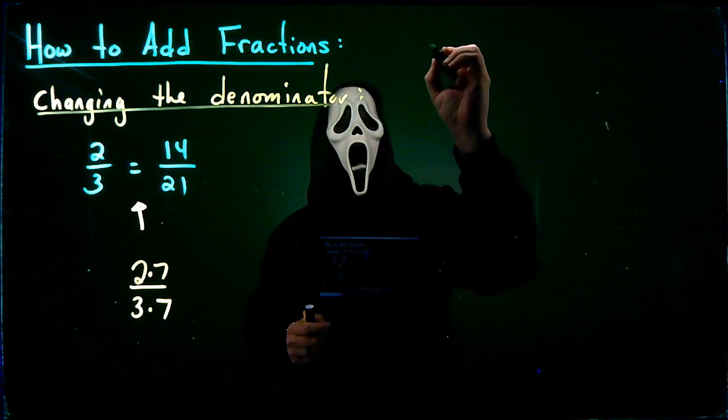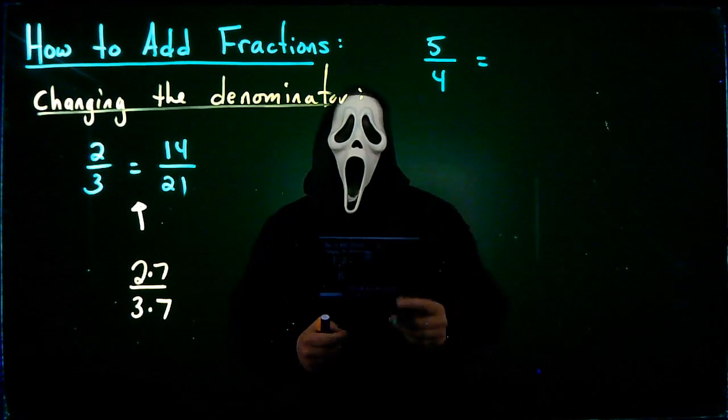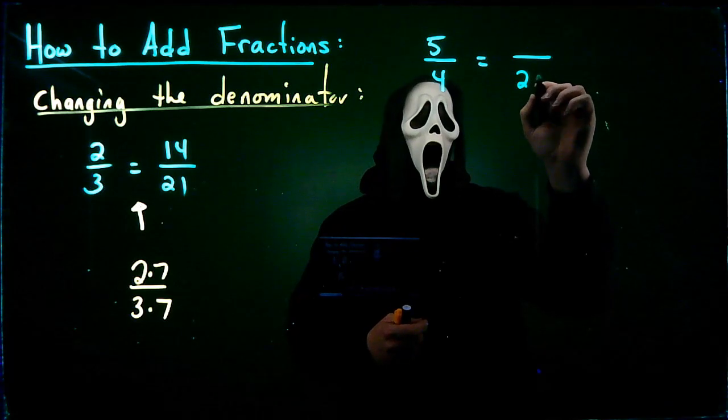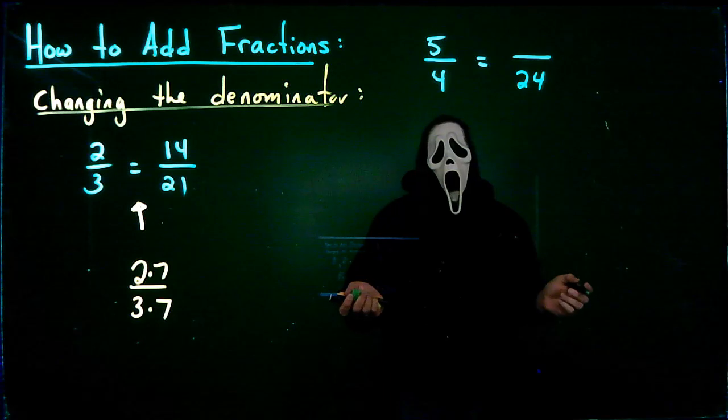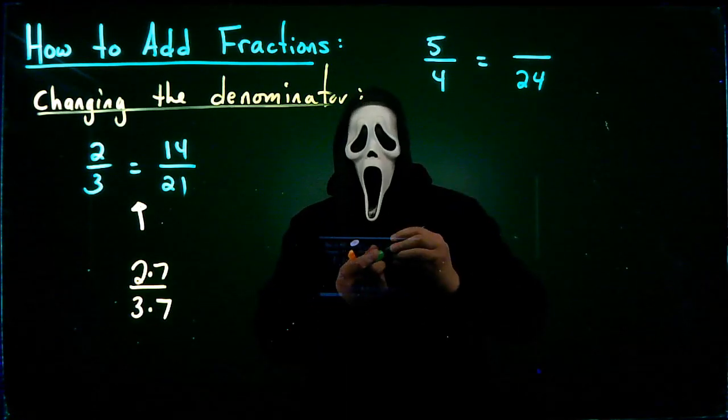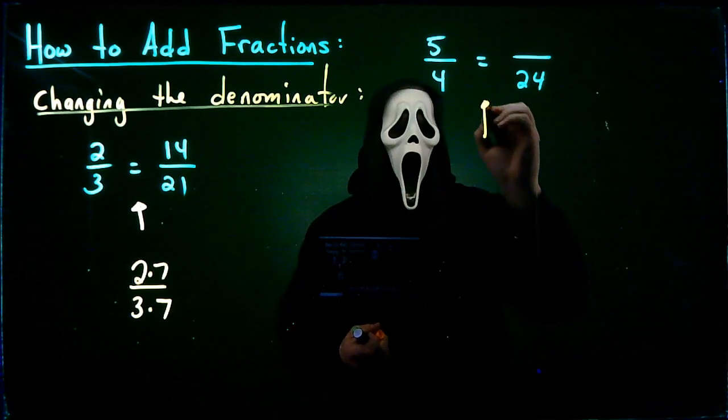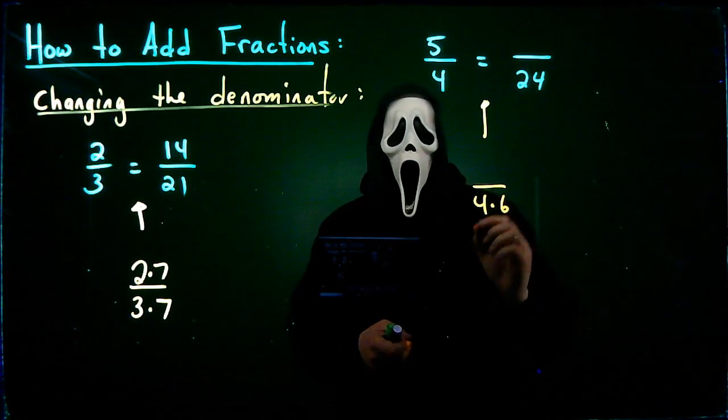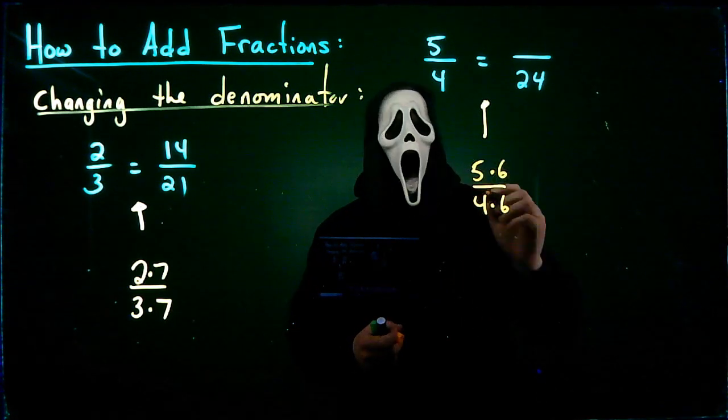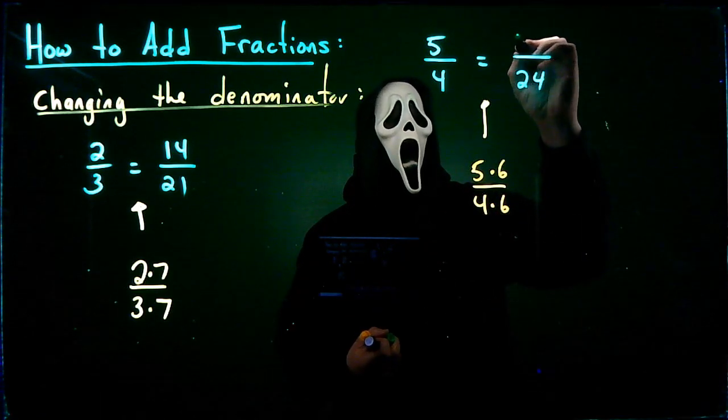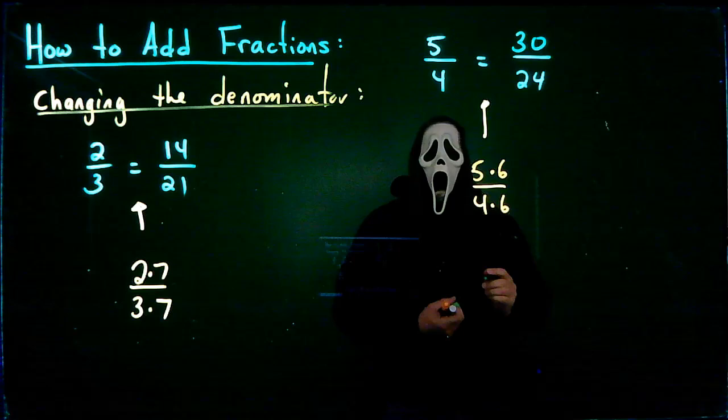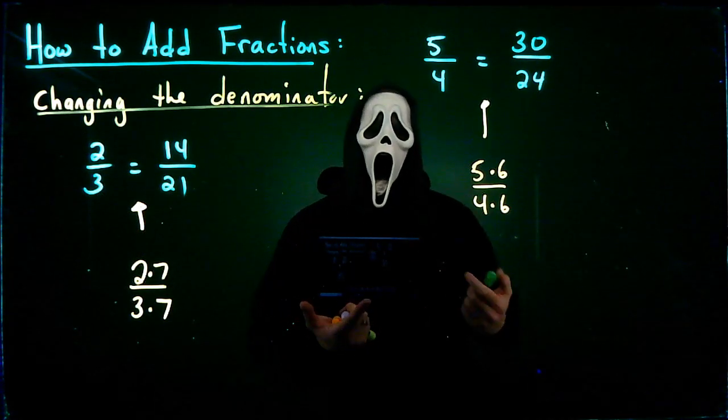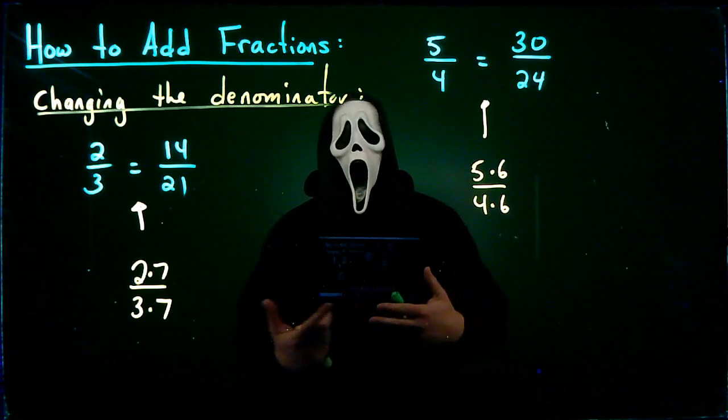One more example. Let's say I have the fraction 5 quarters. And I want to convert this to a fraction where the denominator is 24. So what do I multiply 4 by to get 24? What do I multiply 4 by to get 24? Of course, that would be 6. Therefore, I have to multiply the top by 6 as well. So 5 times 6 on top. And 5 times 6 would be 30. So therefore, 5 quarters is equivalent to 30 twenty-fourths. Now, notice in each of these examples, I converted the denominator to a multiple of 3 or a multiple of 4. And that's something that we will use here when we start to add fractions once we put all the pieces together.